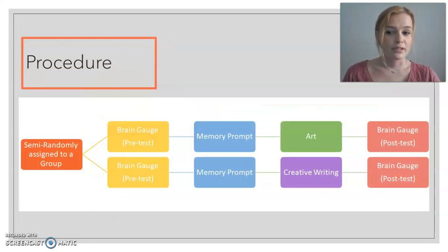So my procedure was quite simple. I semi-randomly assigned participants to the two different groups. Everybody did the pretest preliminary brain gauge cognitive assessment.